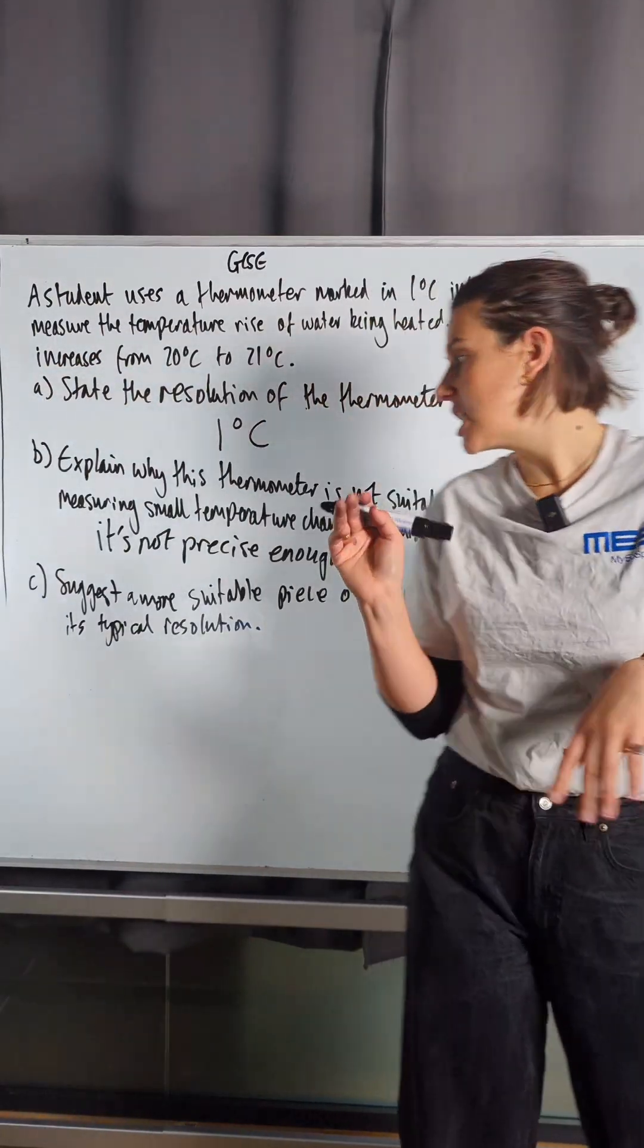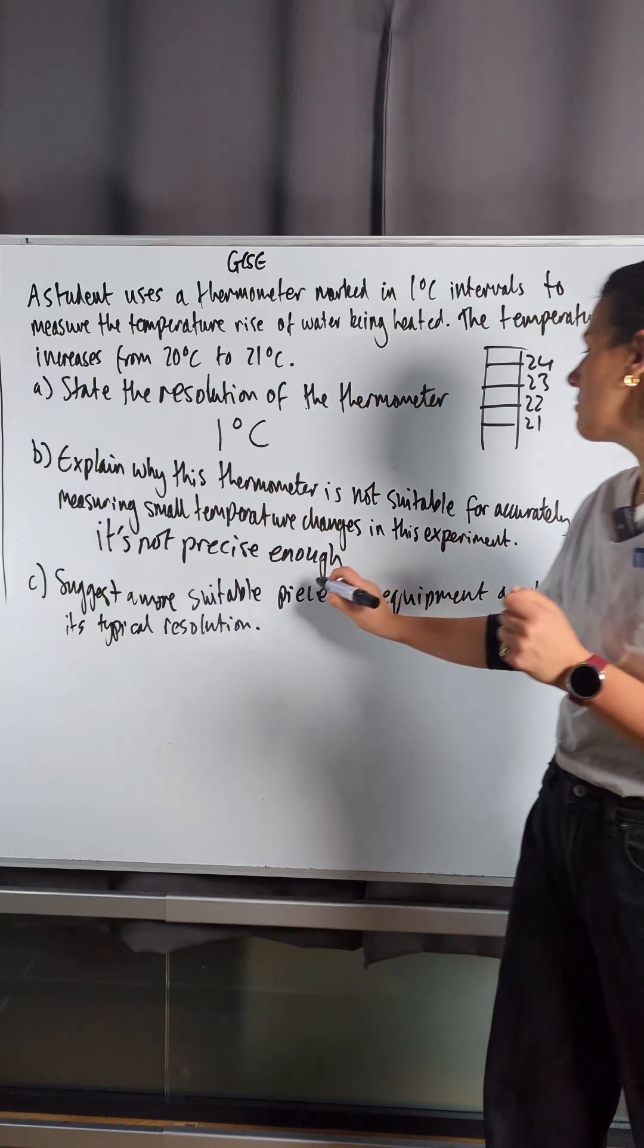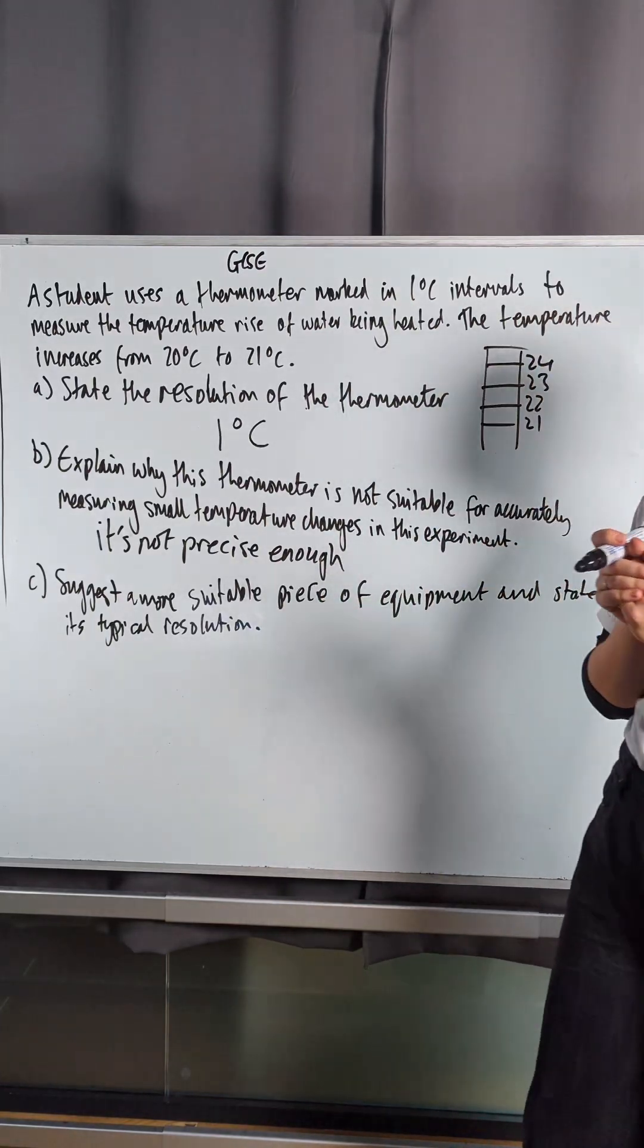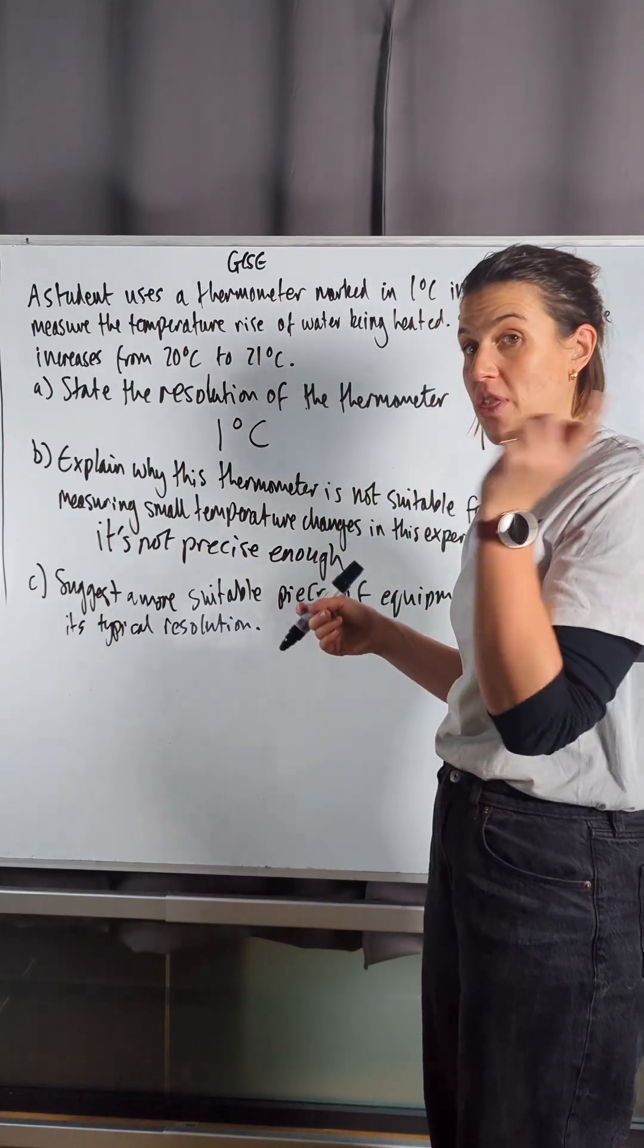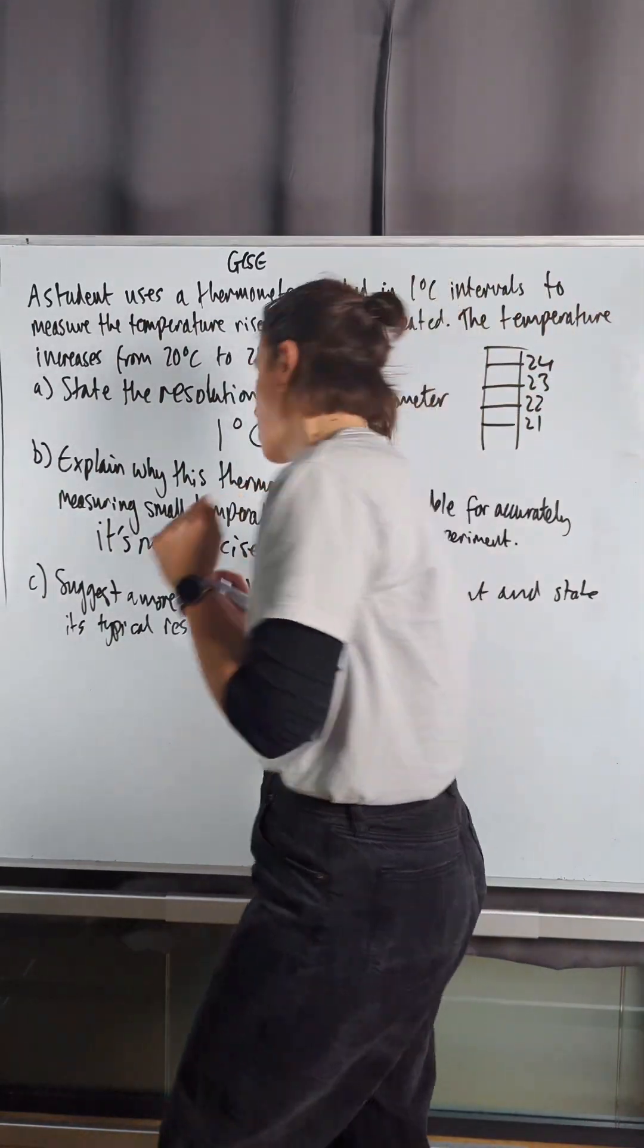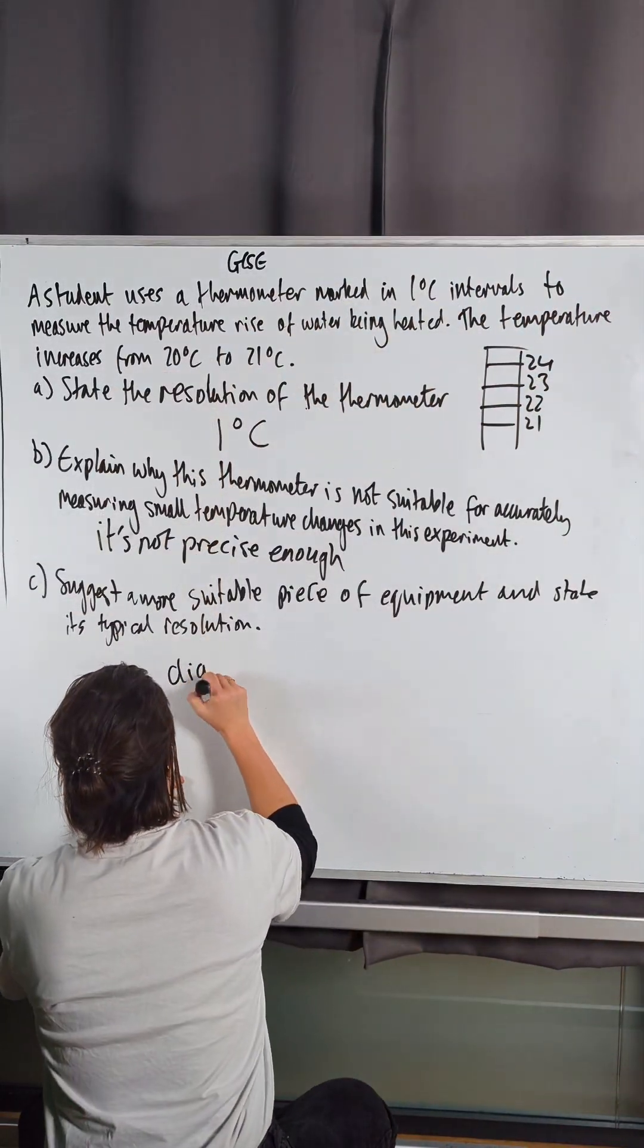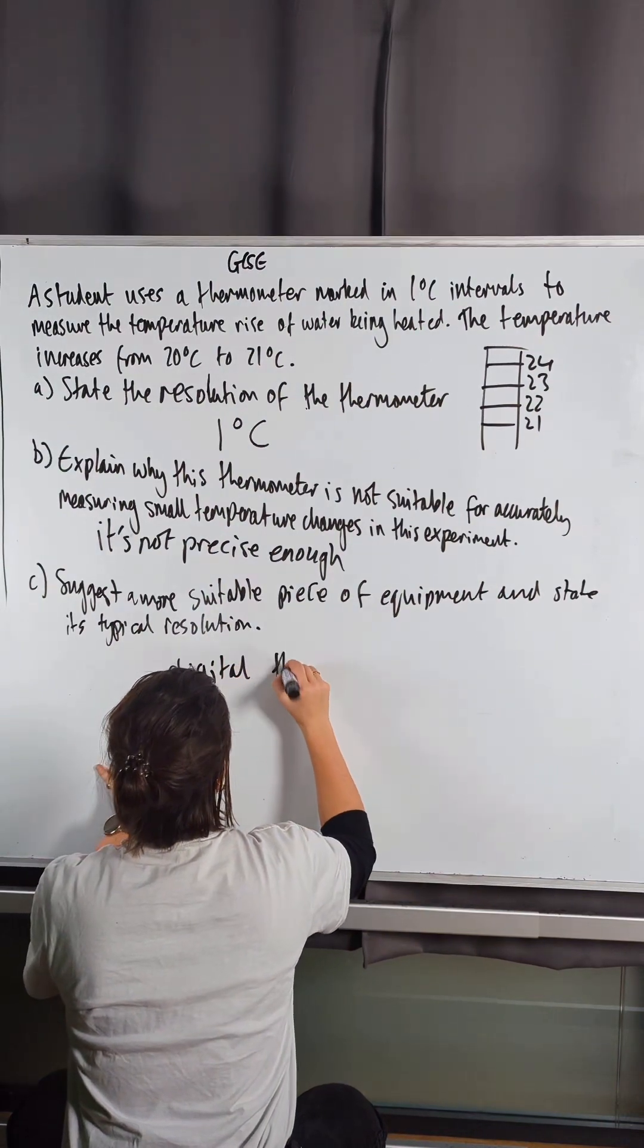Then for part C, I need to suggest a more suitable piece of equipment and state its typical resolution. A more suitable piece of equipment for this experiment is going to be a digital thermometer.